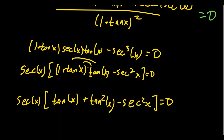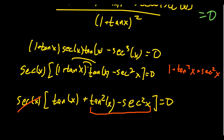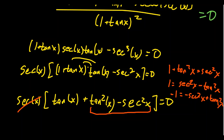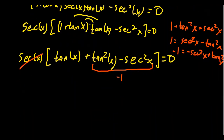Secant can never equal zero — secant is 1 over cosine, and a fraction with numerator 1 is never zero — so we can remove secant from consideration. Notice tangent squared minus secant squared: there's a trigonometric identity at play. We know 1 + tangent squared equals secant squared. Rearranging, tangent squared minus secant squared equals negative 1. So that expression simplifies to negative 1, giving us tangent of x minus 1 equals zero.